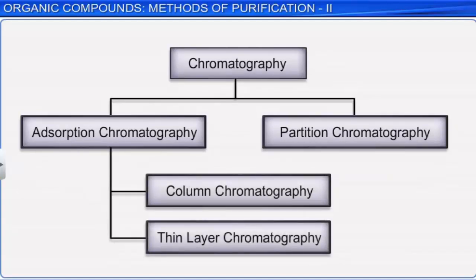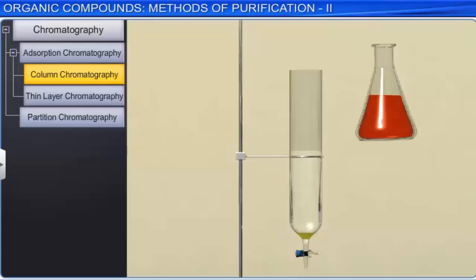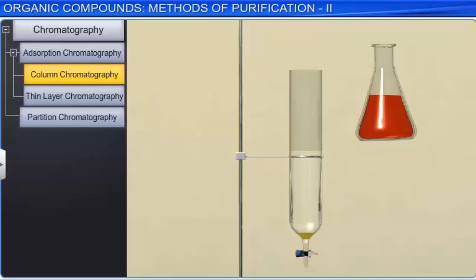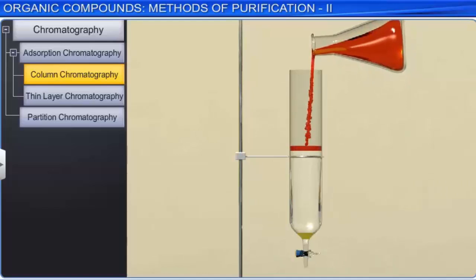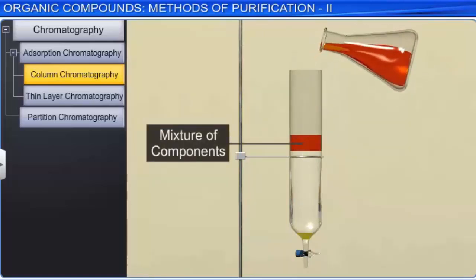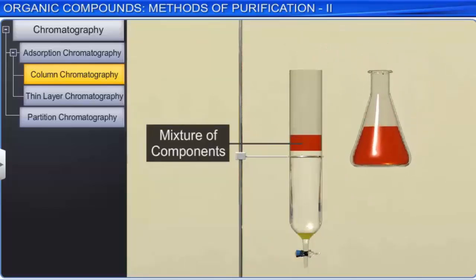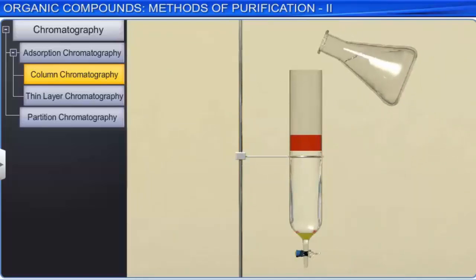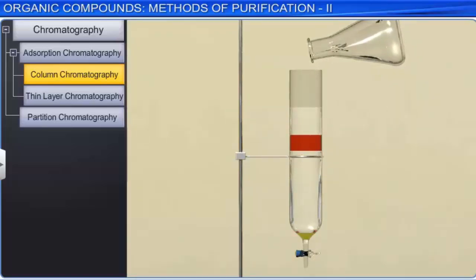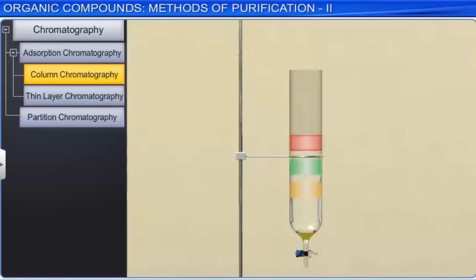In column chromatography, the stationary phase, which is the adsorbent, is packed in a vertical glass tube. The mixture of components to be separated is placed on top of the stationary phase. An appropriate mobile phase or eluent, which is a liquid or mixture of liquids, is allowed to run down the column slowly. During elution, components in the mixture get eluted according to their adsorption strengths. Weakly adsorbed components are eluted first and strongly adsorbed components are eluted later, achieving complete separation.